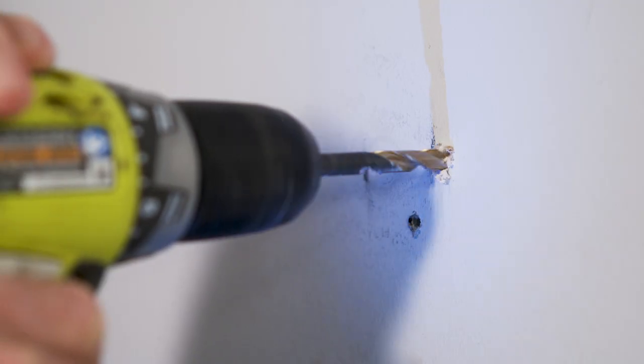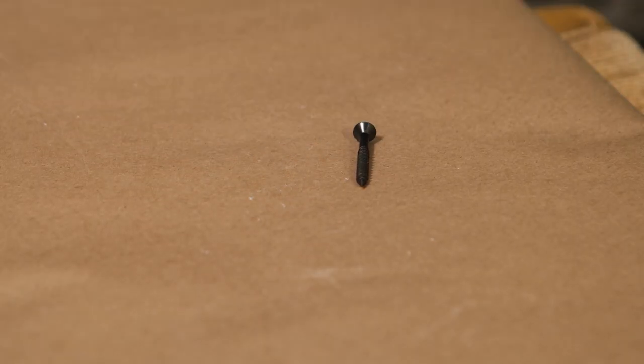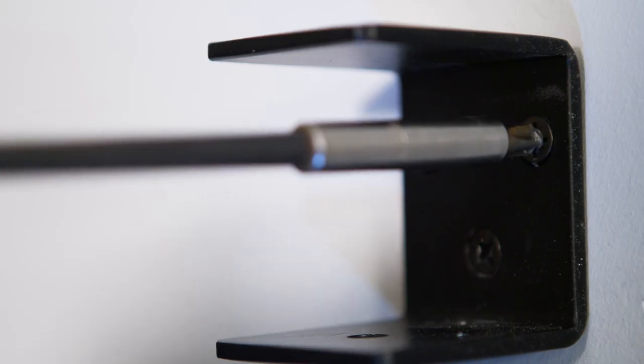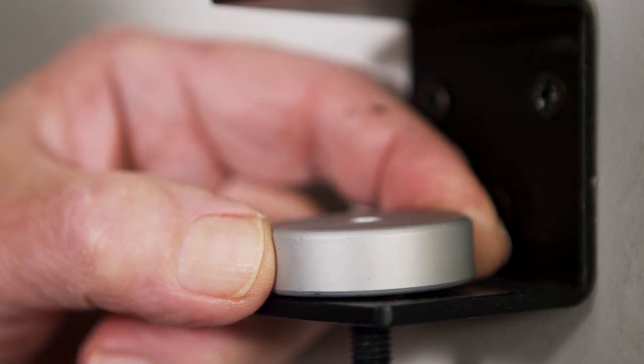Now, I'm returning to the first bracket to install the same hollow wall anchor in the third hole, which is located beyond the edge of the wall stud. With the brackets in place, I reinstall the movable clamp jaws.